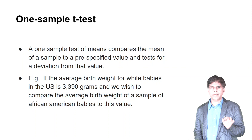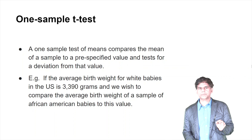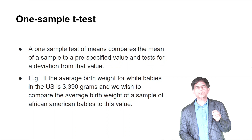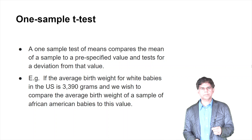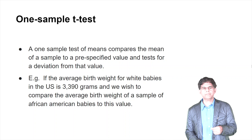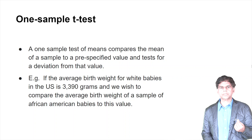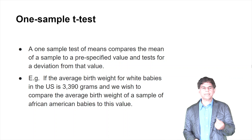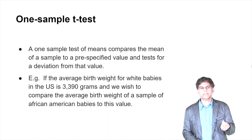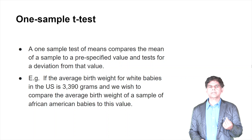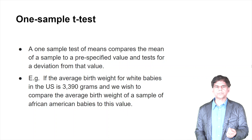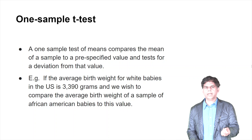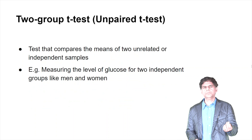The one-sample t-test is usually for continuous variables. It compares the mean of a sample to a pre-specified value and tests for deviation from that value. For example, if the average birth weight of white babies in the United States is 3,390 grams, you wish to compare the average birth weight of a sample of African-American babies to this value — that's a one-sample t-test.